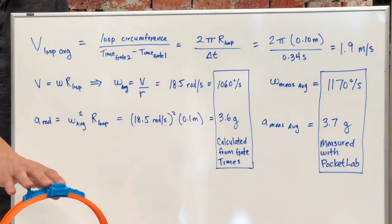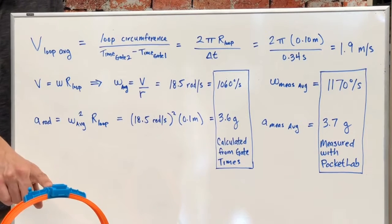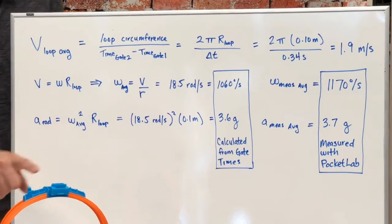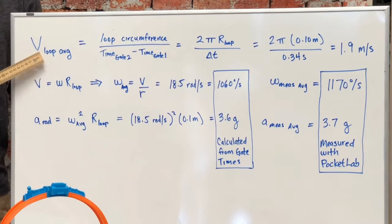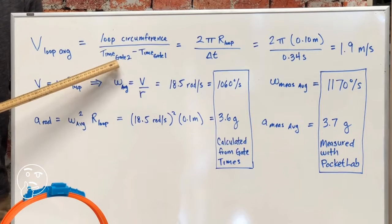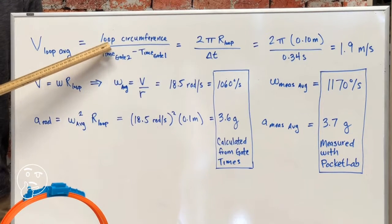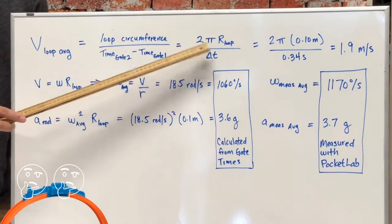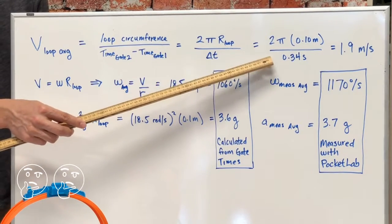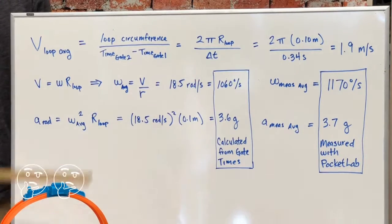Now it's time to do the data analysis. We want to look at the angular velocity inside the loop and the G-forces that are felt. We can do this in a couple ways. We can calculate the average loop velocity using our timing gates: the time that we exit the loop minus the time that we enter the loop, and using the circumference of our track.